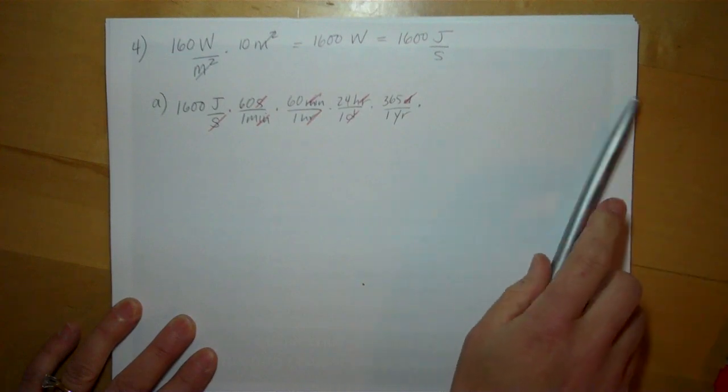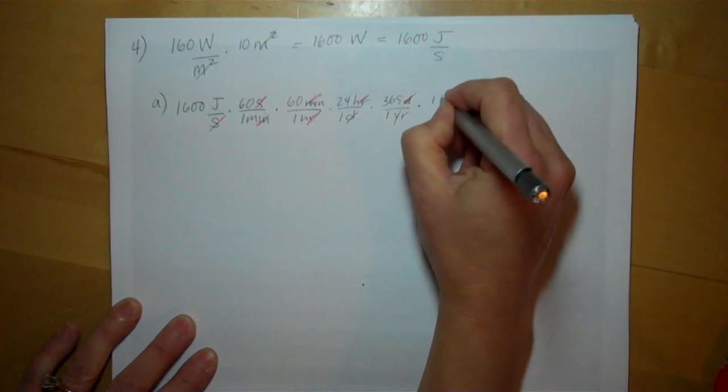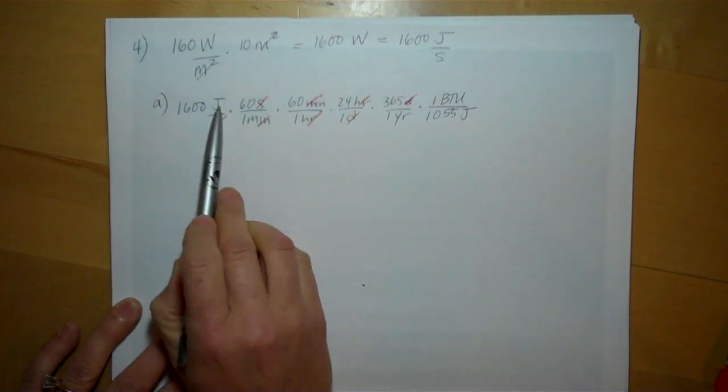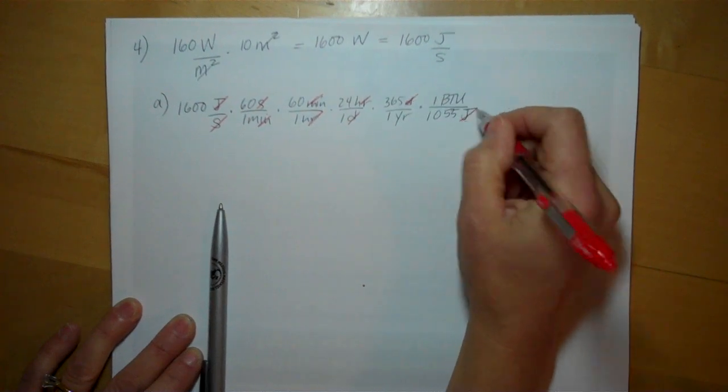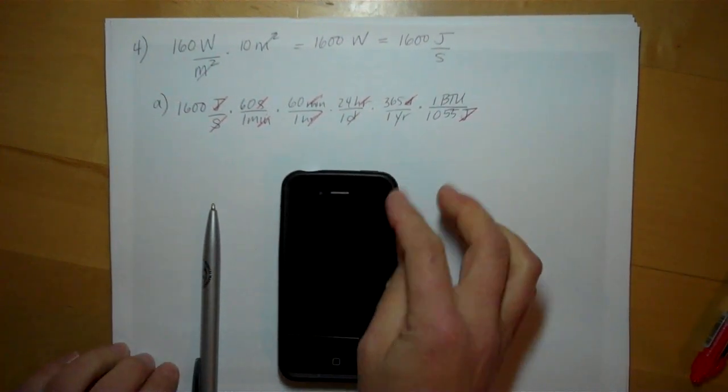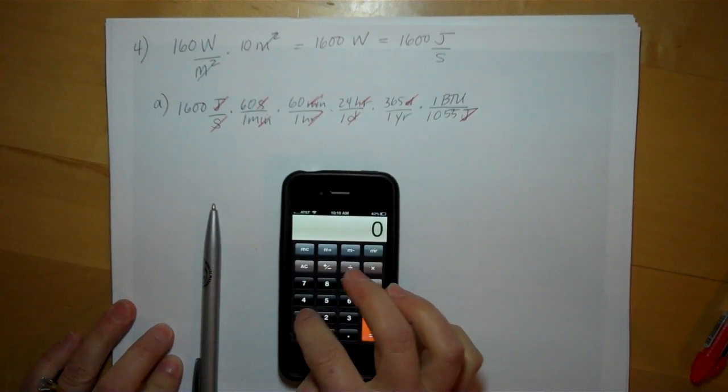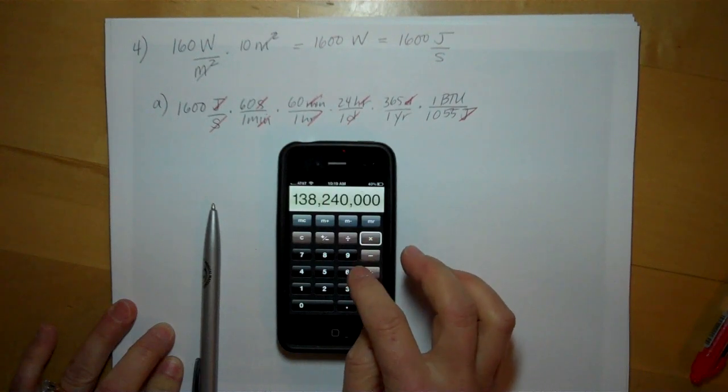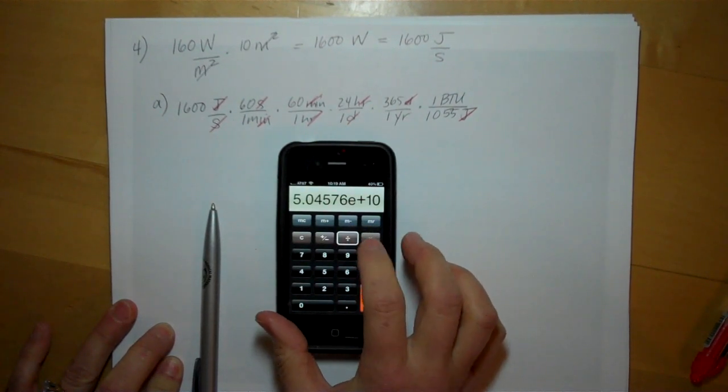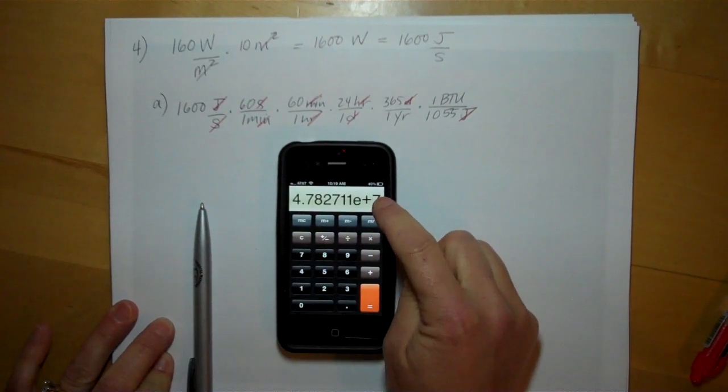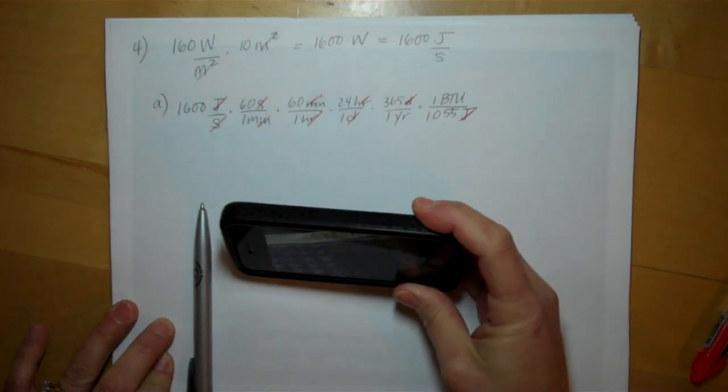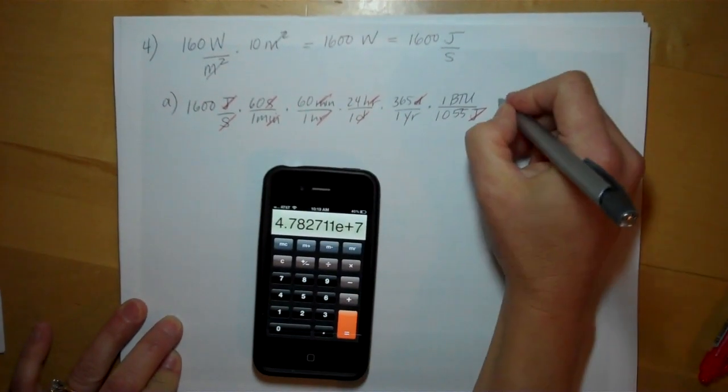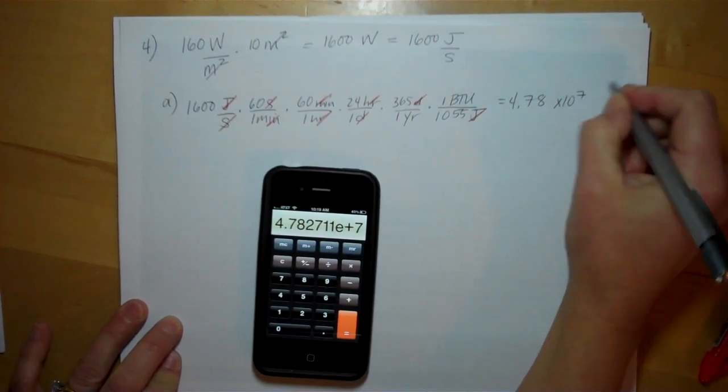We're going to need BTUs later for the hot water, so let's just go to BTUs. We know one BTU is the same as 1055 joules. Notice I put the joules on the bottom because they're on the top here, so joules will cancel. So now all this math: 1600 times 60 times 60 times 24 times 365 divided by 1055 equals 4.78 times 10 to the 7th BTUs.